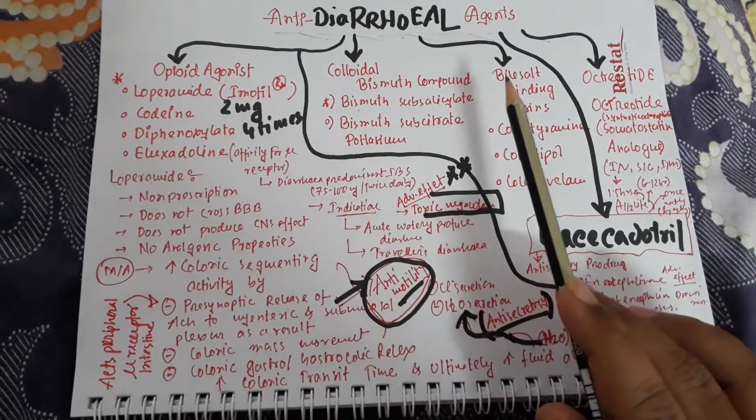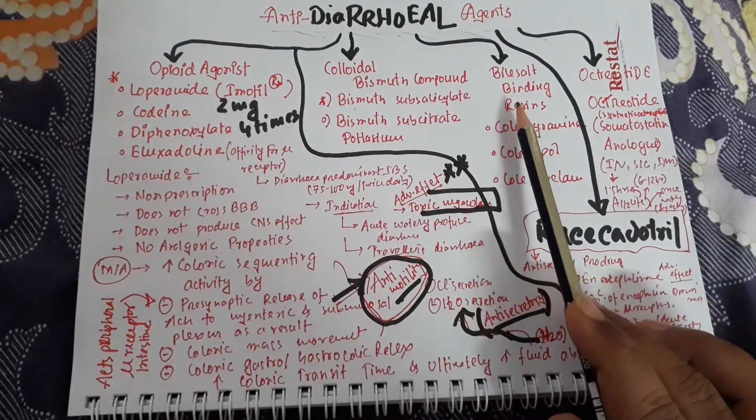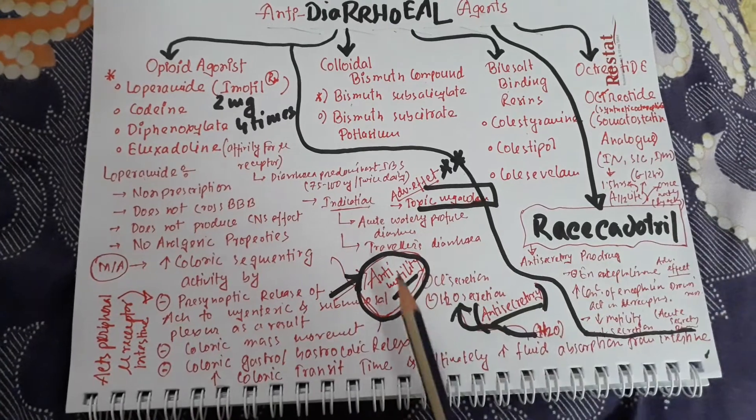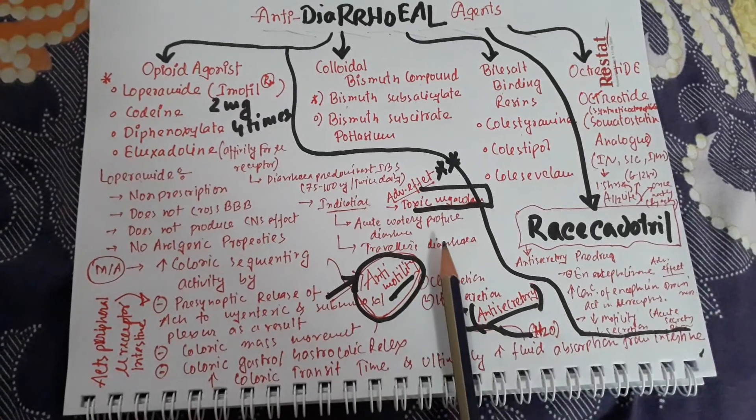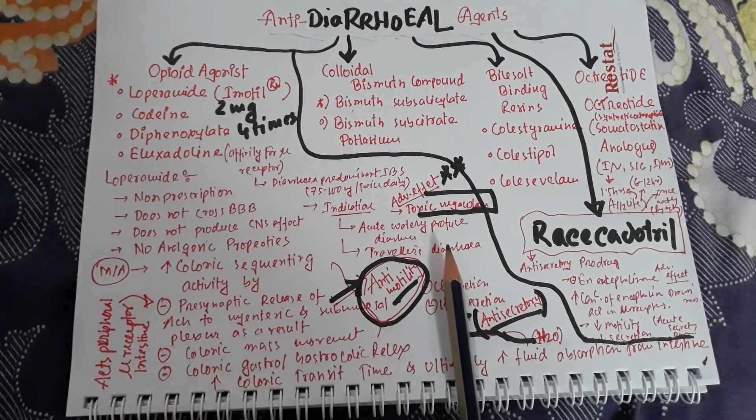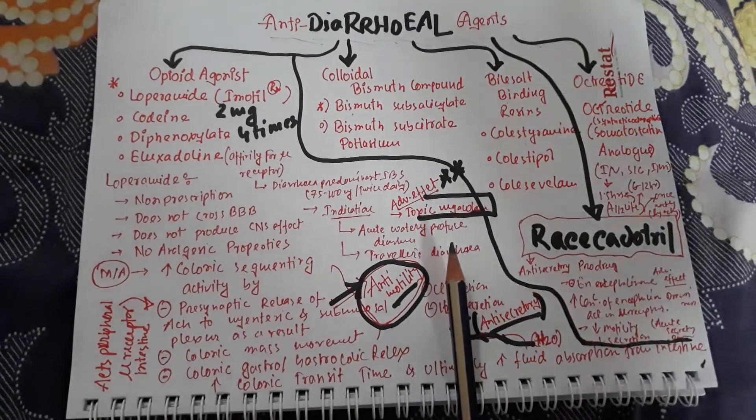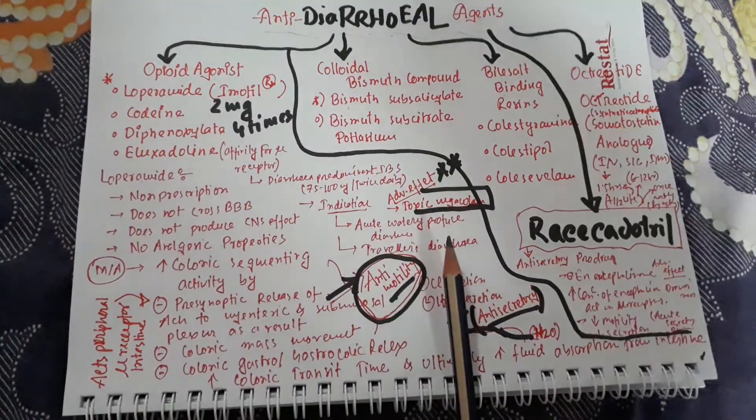These are the important drugs used as anti-diarrheal agents. In the next class, we will discuss colloidal bismuth compounds and bile salt binding resins. Thank you all.